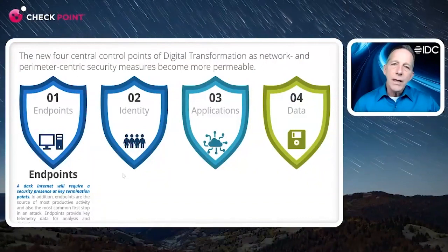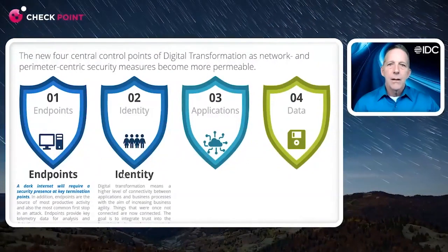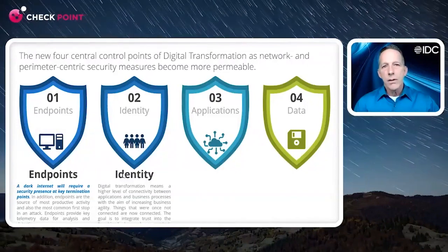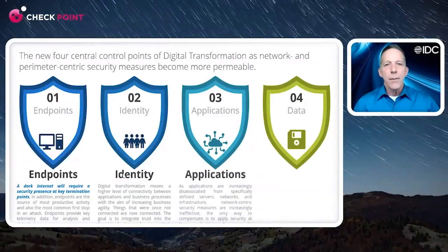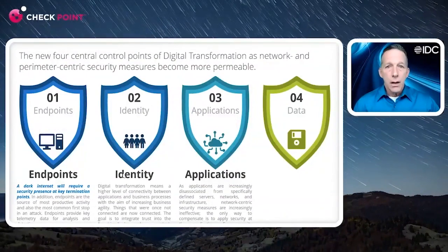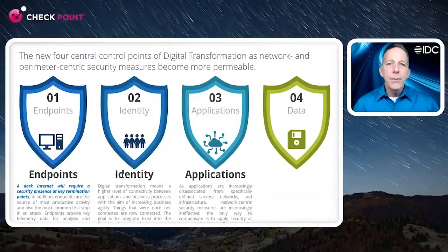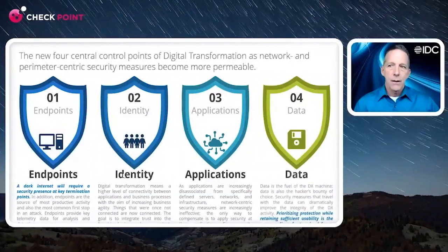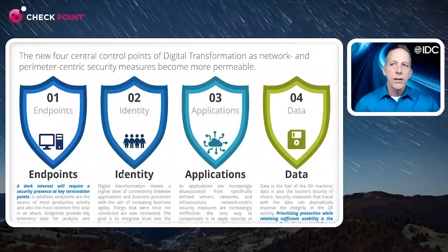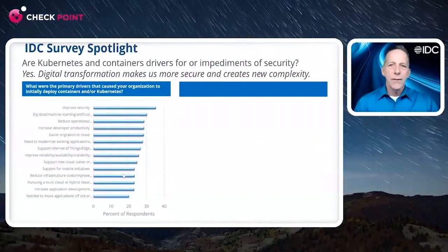If everyone is off-premises, identity becomes a new perimeter. As our applications move off-premises, layer seven protections become the new layer three. And finally, data — the bad actors are coming after our data, so we want to prioritize placing our protections around that data. Digital transformation isn't just about everything having moved; it's about continuously managing what's changing.